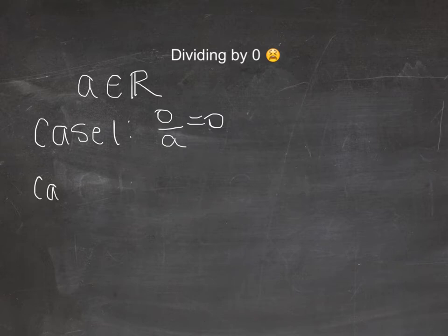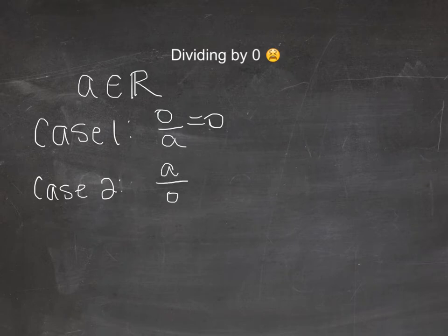The second case is if I have that real number A divided by zero. What this means is if you try to take nine things and divide them into zero groups, you can't do that. It doesn't make any sense.